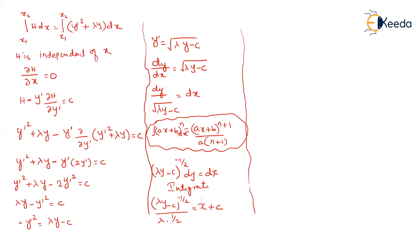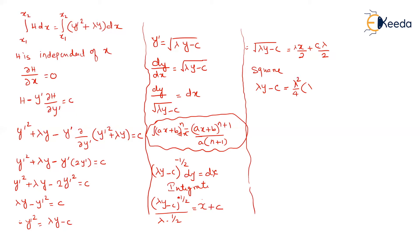Simplifying: the result becomes root of lambda y minus c. If lambda over 2 goes to the right-hand side, that gives x times lambda/2 plus c times lambda/2. Taking the square of both sides to remove the square root: lambda y minus c equals the square of (lambda/2)(x + c). Taking lambda/2 common and squaring gives lambda squared over 4 times (x + c) whole squared.